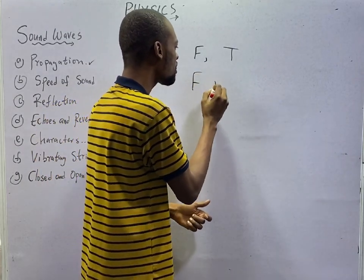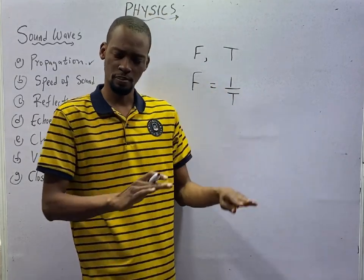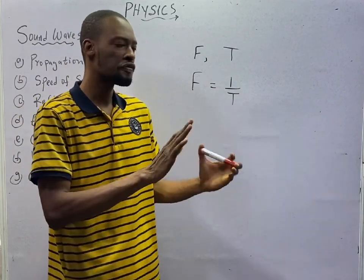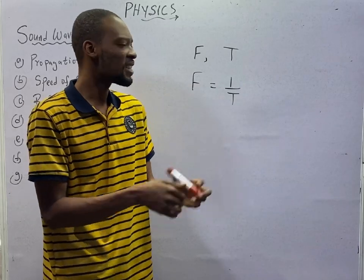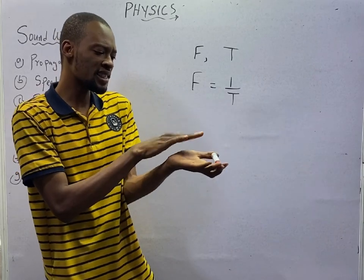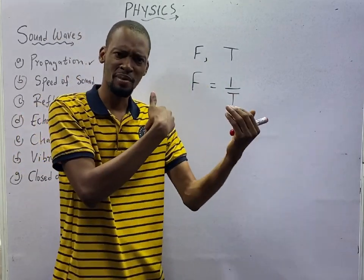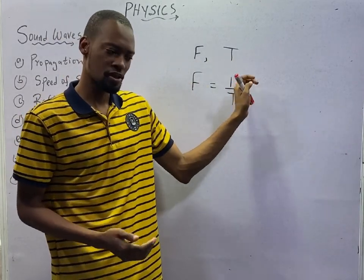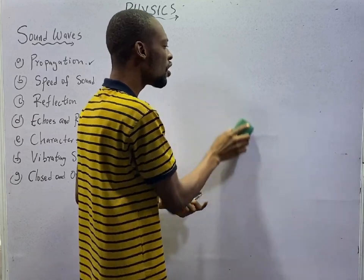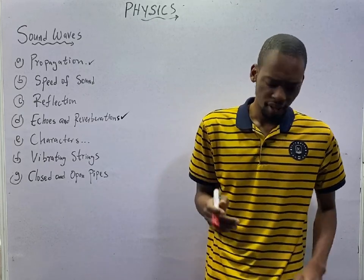Frequency is inversely proportional to period, which means frequency is one over period. What is period? Period is the time taken for one complete wave, or the time taken for one complete oscillation. So if we are saying number before time, that is frequency. Time before number, that is period. Period is focused on time, while frequency is focused on the number of waves or the number of oscillations.